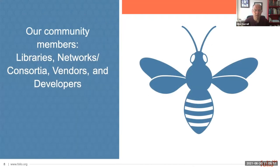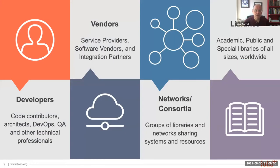There are four distinct types of organizations participating in Folio. From an individual perspective, we are building a software platform, so we have developers and technical people contributing to the overall process. We also have vendors participating in the project. We have consortia and networks around the globe, and libraries of all types and sizes. These organizations all come together as peers and partners to cooperatively define what the features are going to be, what the rules of the community will be, and how the overall effort proceeds.